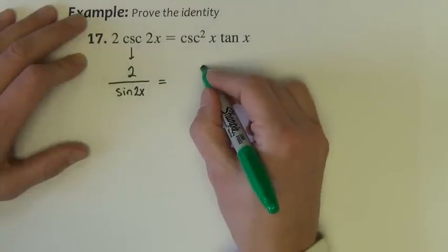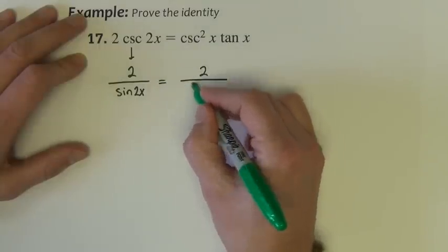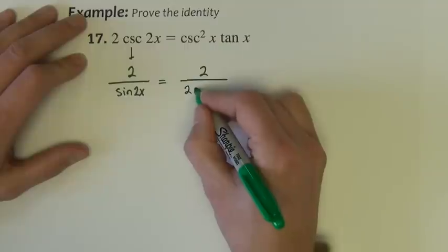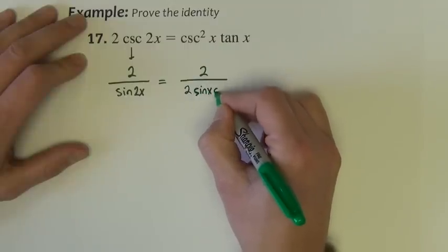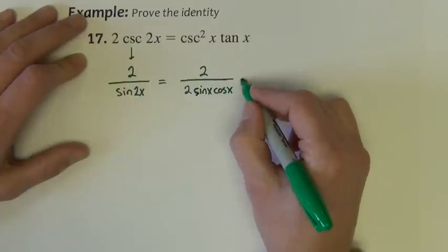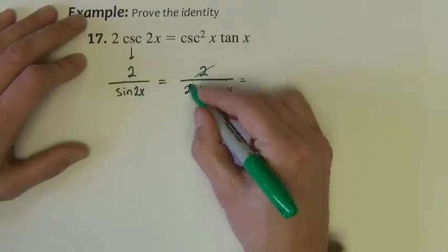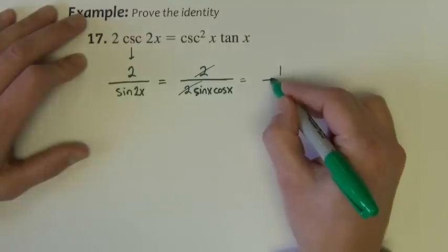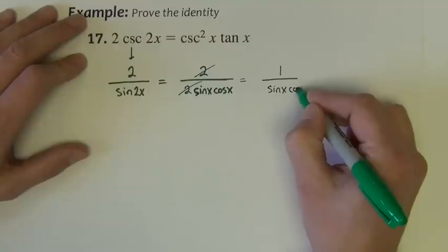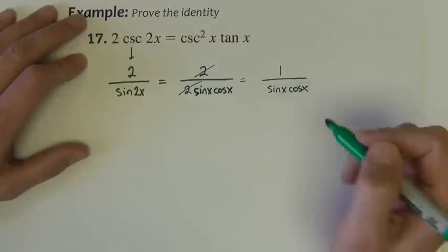That would be 2 over sine 2x. Sine 2x is 2, I believe we had sine x cosine x. That's the same as, with the 2s dividing out, 1 over sine x cosine x.